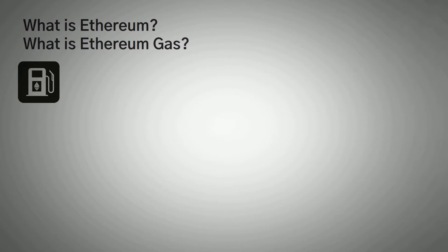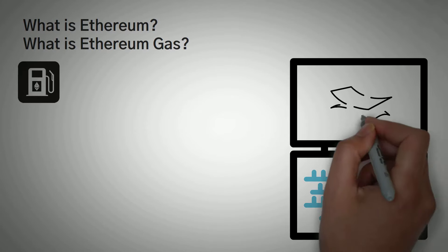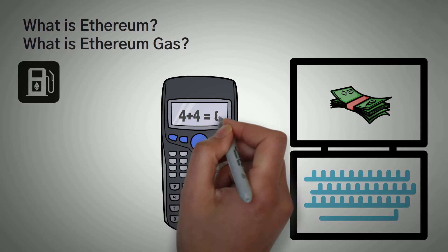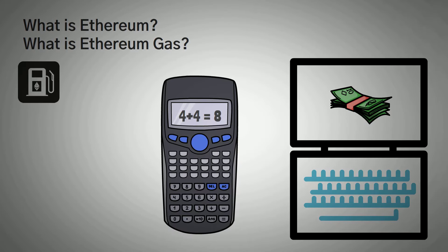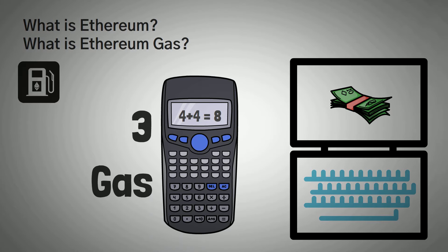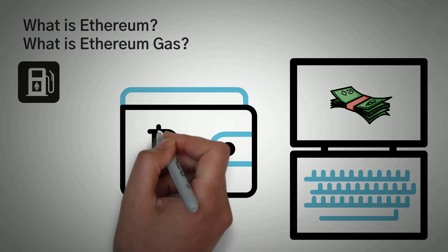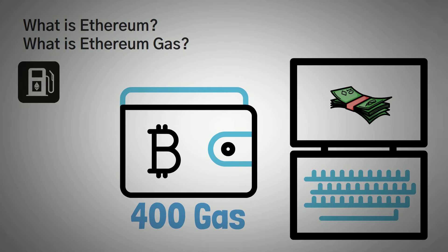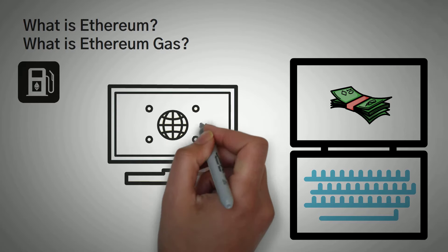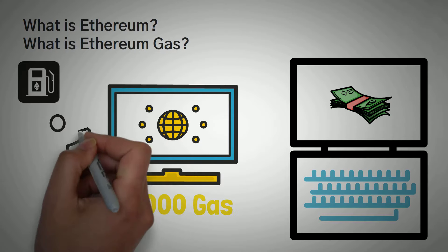Ethereum is programmable money — you can use it to do things. For example, you could add 4 plus 4 and Ethereum would tell you the answer is 8, but it would cost you 3 gas. If you wanted to check your friend's Ethereum wallet balance, you might need 400 gas. And if you wanted the network to send some ether to your friend, you would have to pay 21,000 gas.